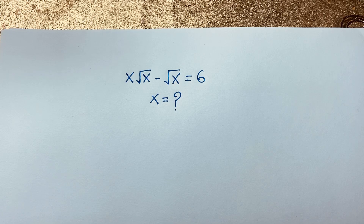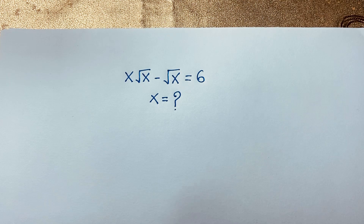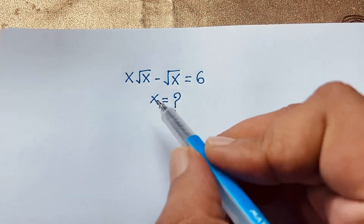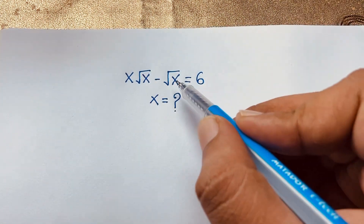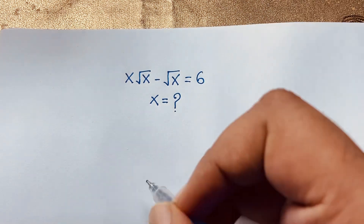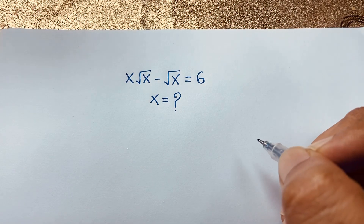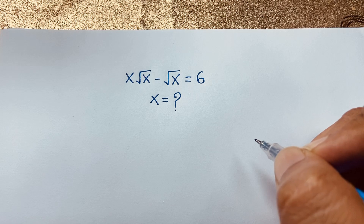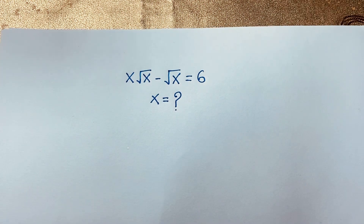Hello everyone, welcome to Russell's Classroom. Today we have solved a nice math Olympiad question. This question is x times square root x minus square root x is equal to 6. We will find out the value of x in this math problem.